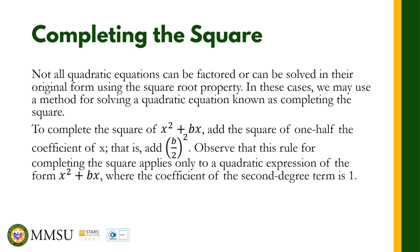Not all quadratic equations can be factored or solved in their original form using the square root property. In these cases, we use completing the square. To complete the square of x² + bx, we add the square of one-half the coefficient of x — that is, we add (b/2)². This rule applies only to quadratic expressions of the form x² + bx, where the coefficient of the second-degree term is 1.